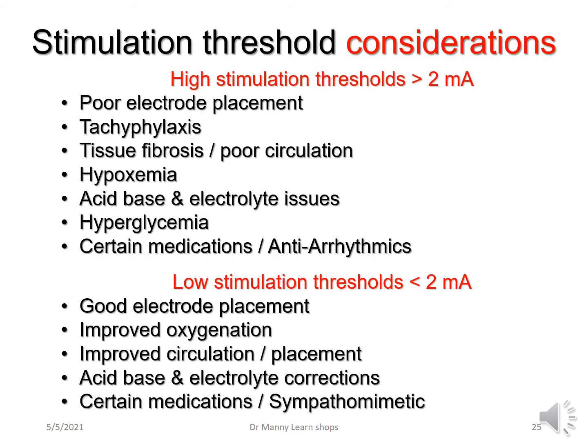Stimulation threshold considerations — when things don't go according to plan: high stimulation thresholds, more than 0.2 milliamps, typically occur because of poor electrode placement, tachyphylaxis — meaning the heart has adapted and requires higher and higher doses of stimulation — tissue fibrosis or poor circulation where the electrode is placed, hypoxemia, acid-base and electrolyte issues, hyperglycemia, and certain medications such as antiarrhythmics like amiodarone that decrease sensitivity.